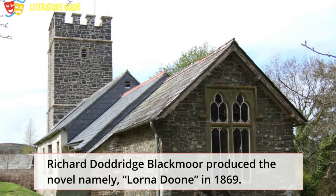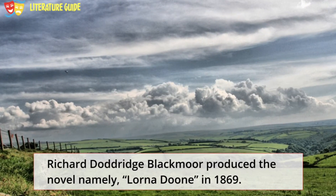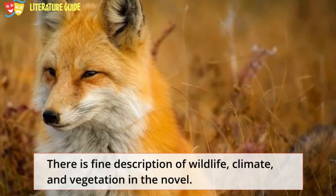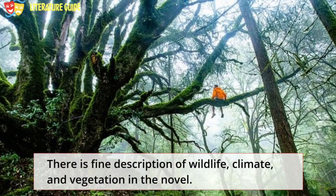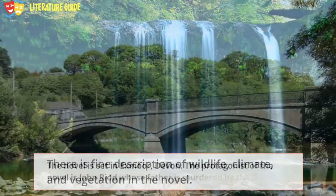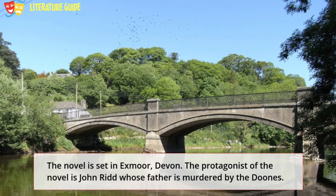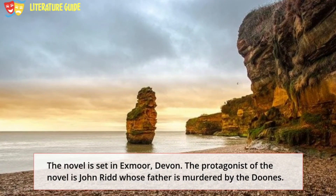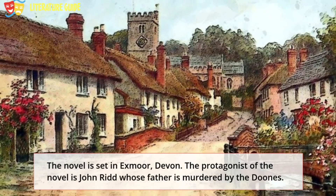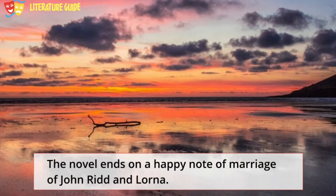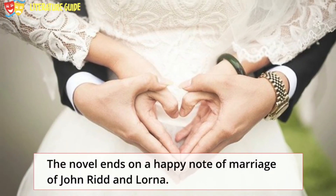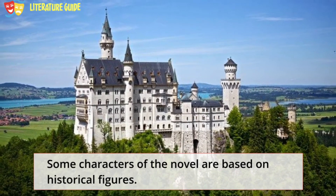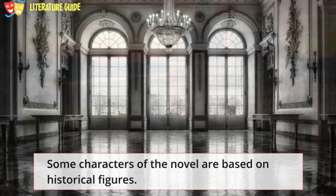R.D. Blackmore produced the novel Lorna Doone in 1869. There is a fine description of wildlife, climate, and vegetation in the novel. It is set in Exmoor, Devon. The protagonist is John Ridd, whose father is murdered by the Doones. The novel ends on a happy note of the marriage of John Ridd and Lorna. Some characters of the novel are based on historical figures.